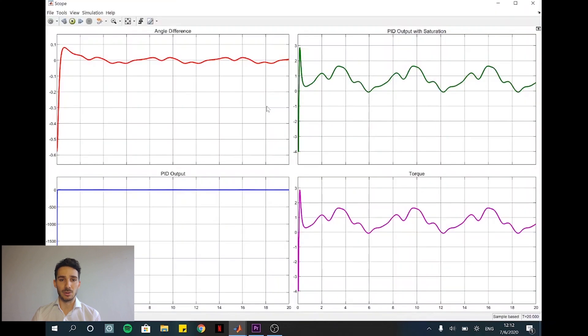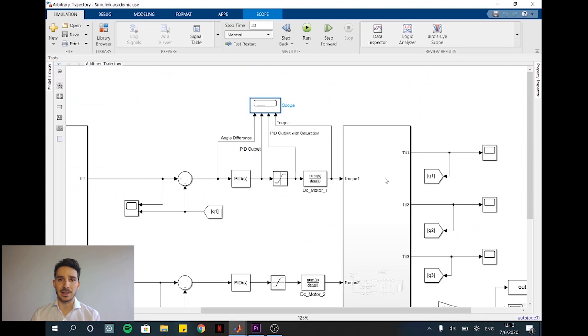Clicking on the scope, we will find as the figure graph the angle difference followed by the PID output. It is here where it can be seen the importance of the saturation stage that prevents extreme values of voltage entering the DC motor.